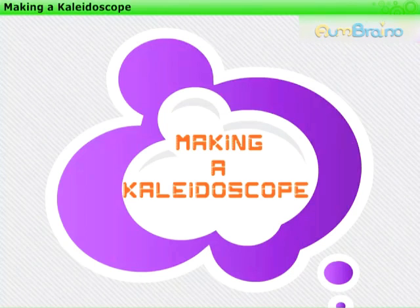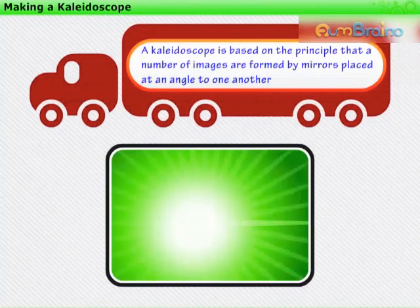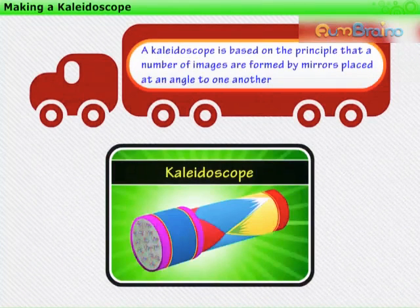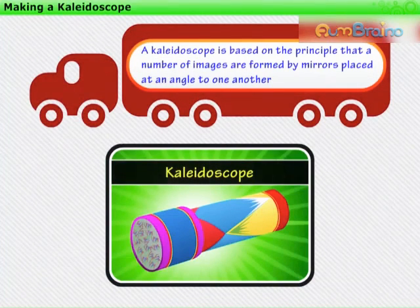Making a Kaleidoscope. We know that a kaleidoscope is based on the principle that a number of images are formed by mirrors placed at an angle to one another.